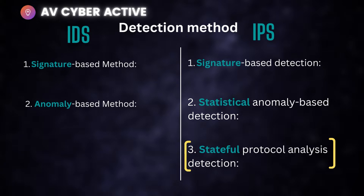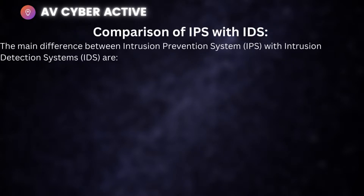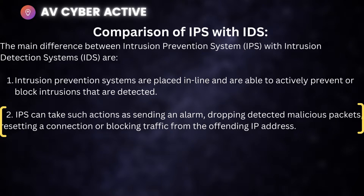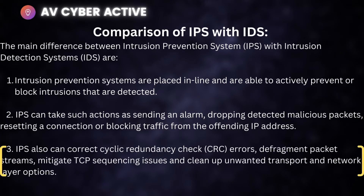Since IPS gets the most attention, here's a quick comparison of IPS with IDS. First, an IPS system is an inline device able to actively prevent or block detected intrusions — the keyword is inline, placed between the network, taking actions by blocking malicious connections. Second, IPS can take actions such as sending an alarm, dropping malicious packets, resetting a connection, or blocking traffic from an offending IP address. Third, the IPS device can correct CRC (cyclic redundancy checks), defragment packet streams, mitigate TCP sequencing issues, and clean up unwanted transport or network layer options — making IPS a very powerful device overall.